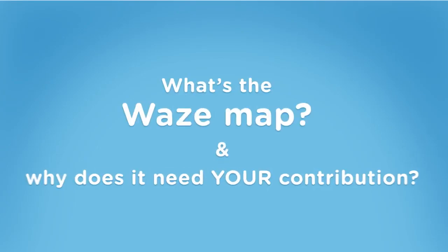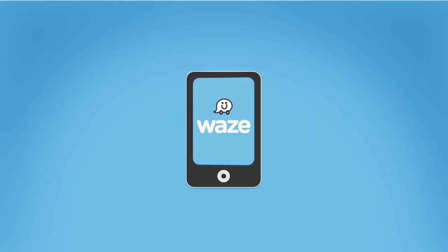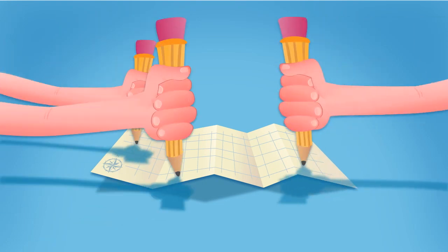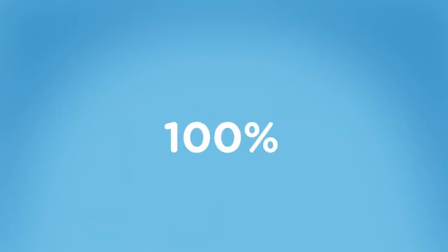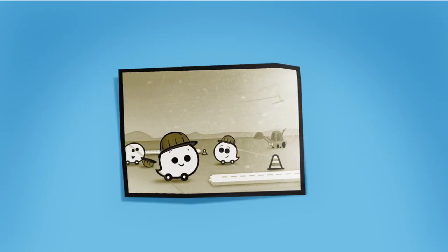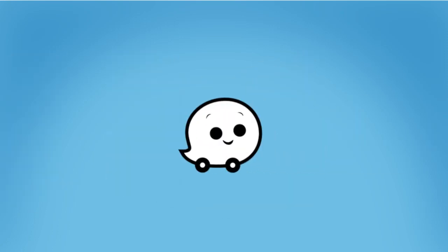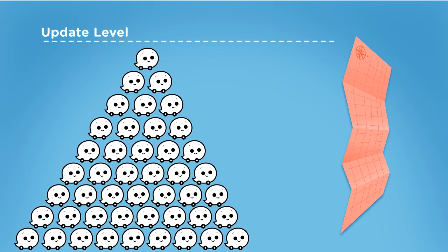What's the Waze map and why does it need your contribution? First off, Waze's map is the core of our service and basically behind everything we do. Waze's map is unique because it's generated and constantly updated by the Waze community itself. That's how we keep Waze 100% free for our users. And the cool part is that as a result of the contributions of our users, our map is actually the most up-to-date one out there. In fact, in places where the local Waze communities are strongest, our maps are the first to reflect any and all road changes, almost instantaneously.